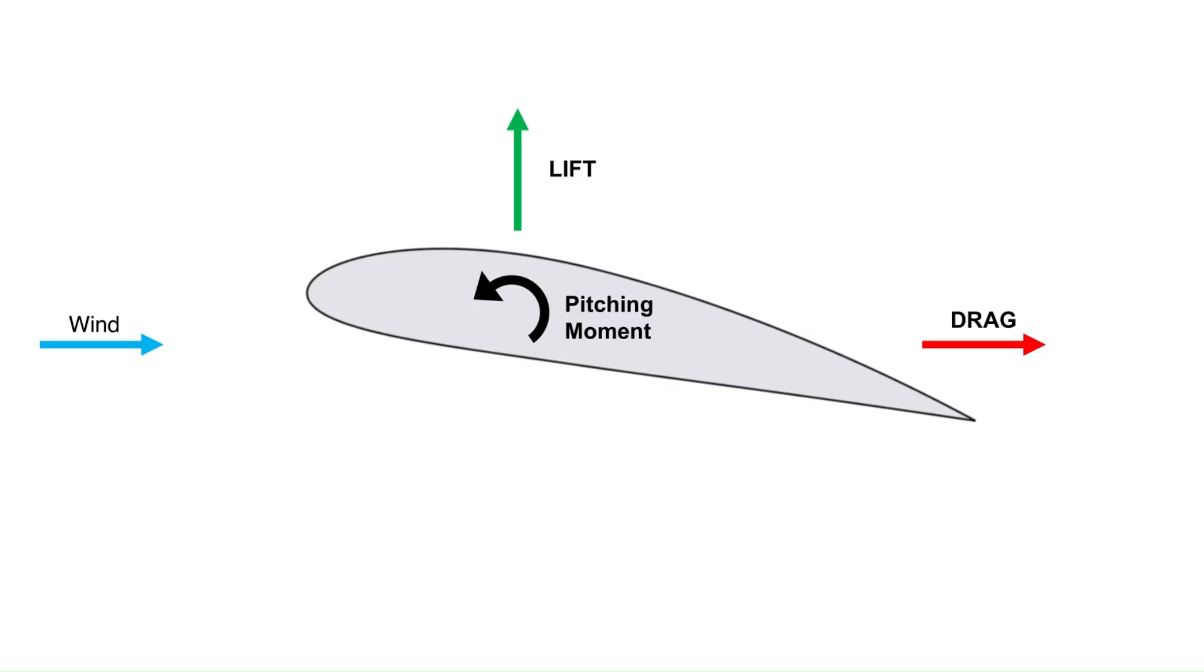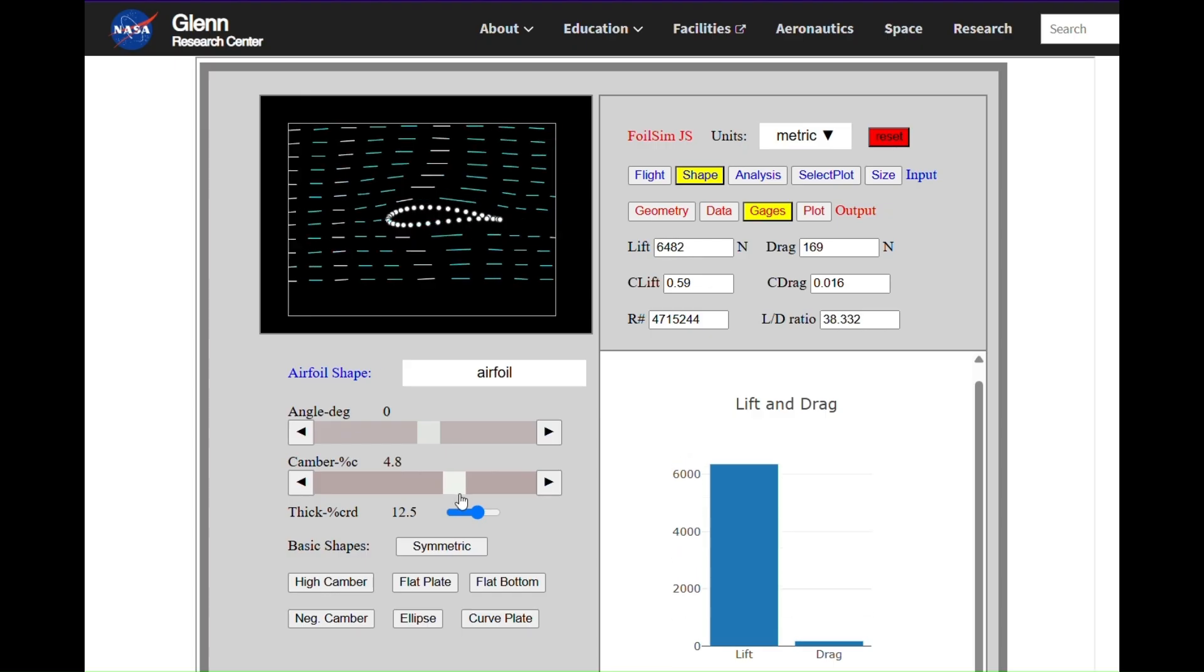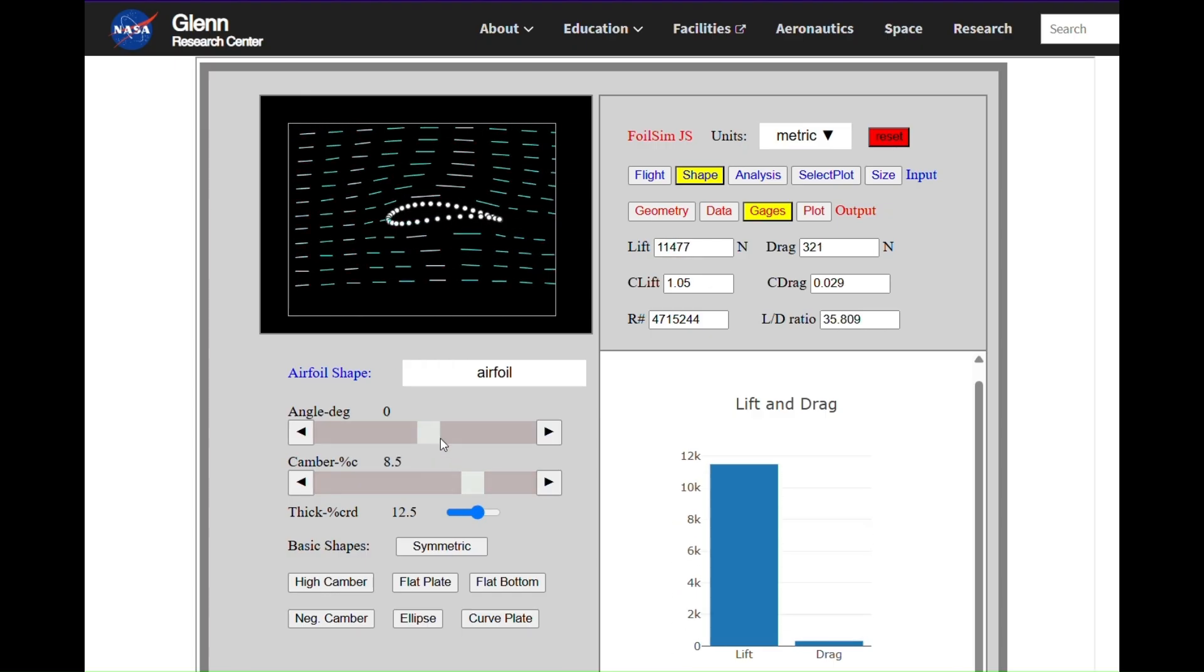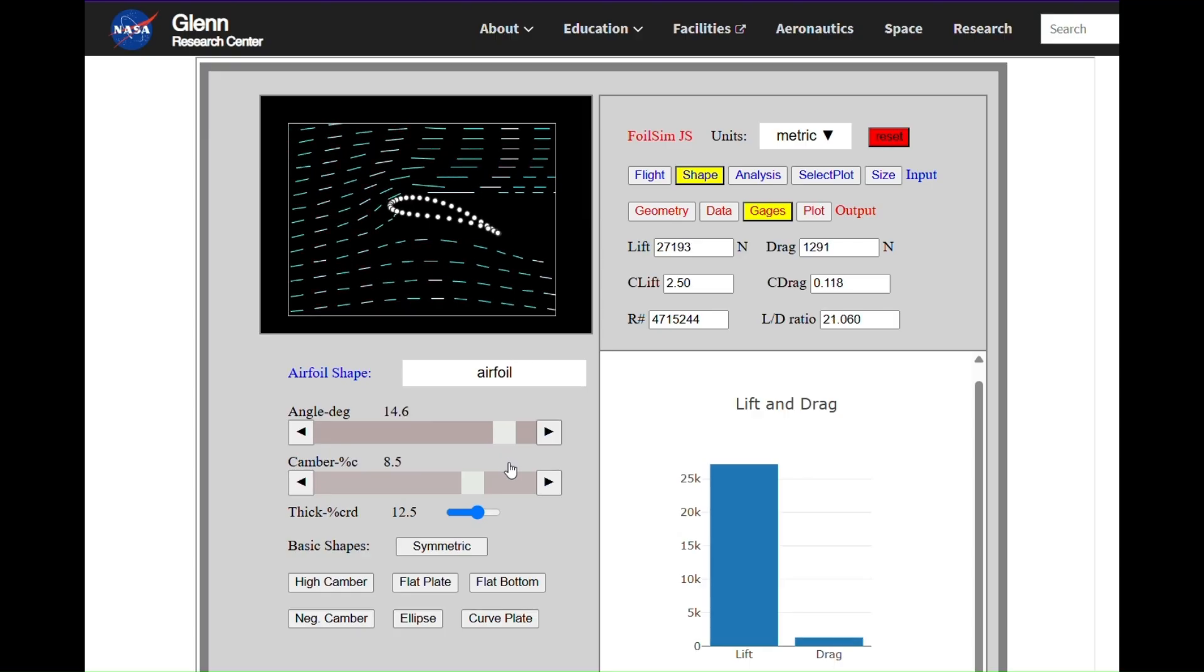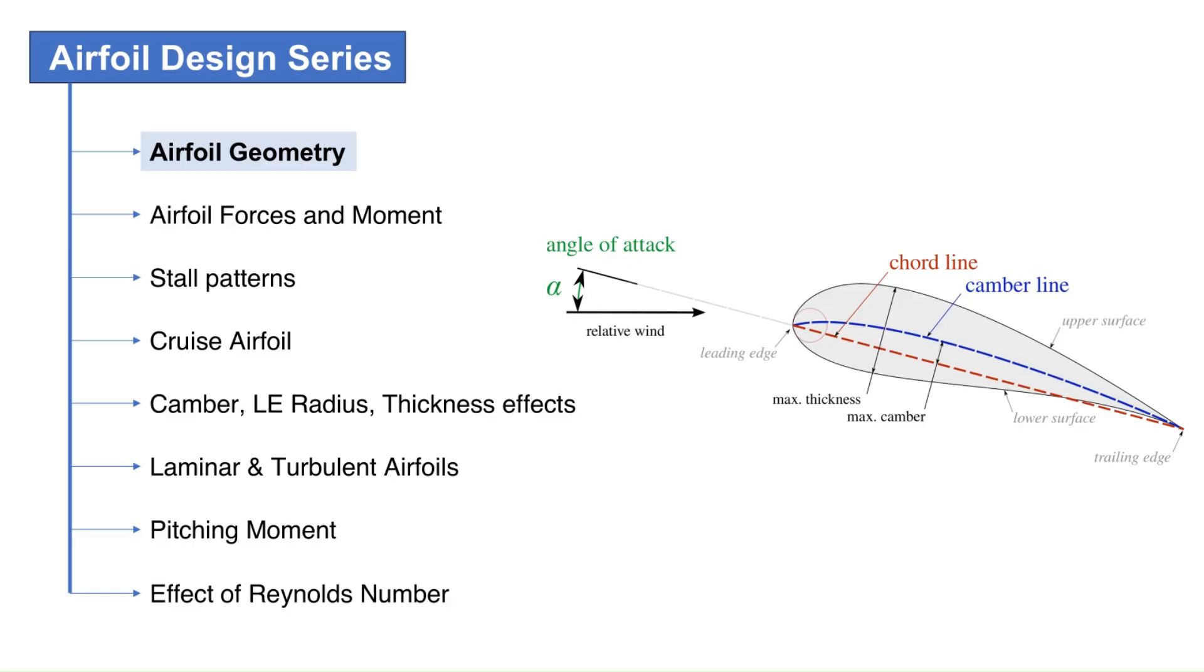When an airfoil moves through air, it generates two forces and one moment. In the next part of this video series, we will take a look at these forces and moment, which will help us choose an airfoil for a particular aircraft design. We are going to build on the basics discussed here so subscribe to the channel for latest updates on this airfoil design series. Thank you for watching.